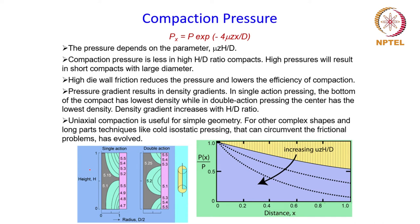We are considering a compact with the same height — in one case pressed by single action where pressure is applied by one punch, and in the other case by double action where pressure is applied by both punches. In single action pressing, the top and middle have high pressure while the bottom has the lowest pressure. In double action pressing, the center has the lowest pressure and as a result also the lowest density.